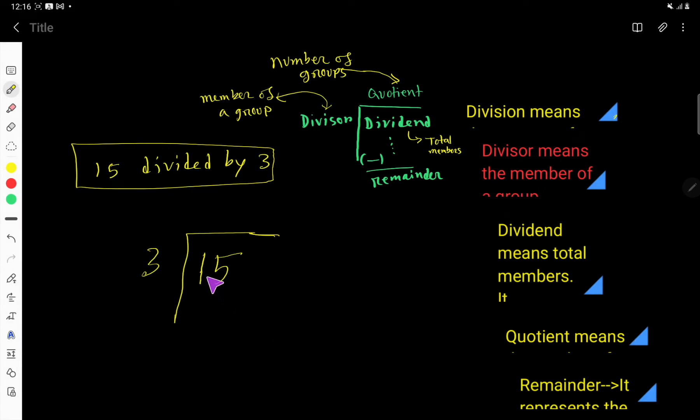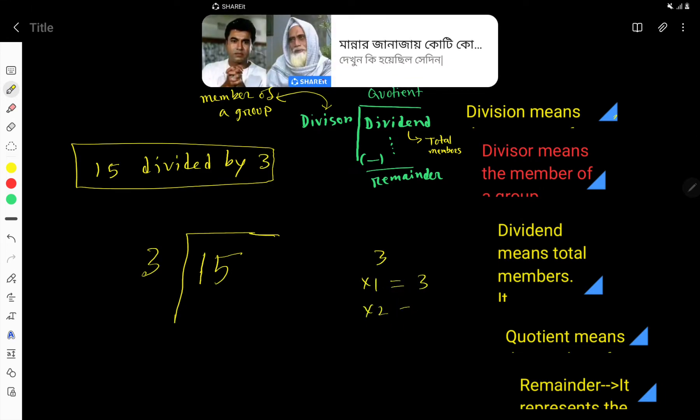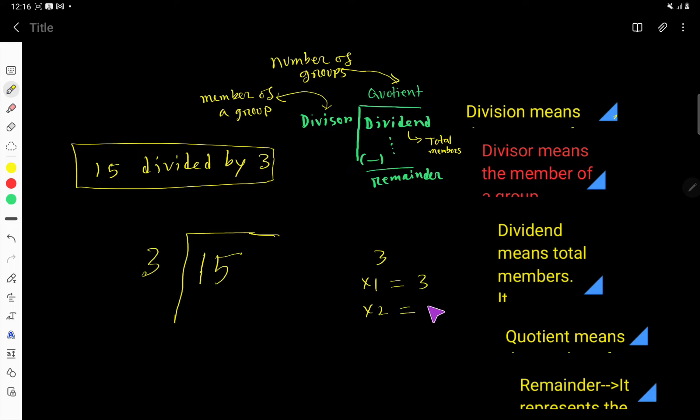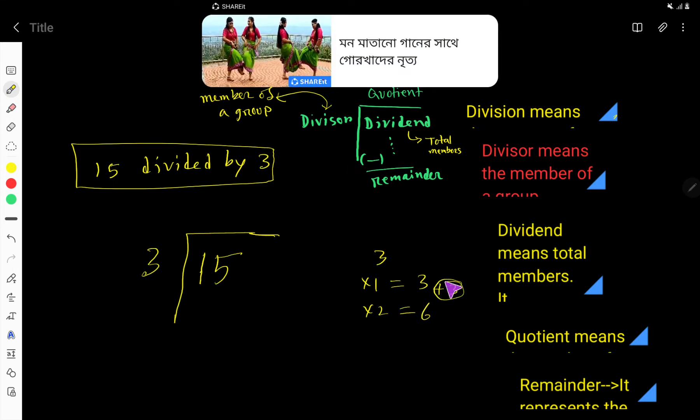So to divide 15 by 3, we need the multiplication table of 3. Let us find that. So look, 3 times 1 is 3, 3 times 2 is 6. Look, to get 6, just add 3 with this 3.